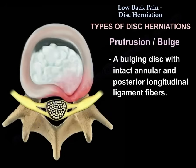A patient may have protrusion or bulge. A bulging disc has intact annular and posterior longitudinal ligament fibers. That represents a small disc bulge.